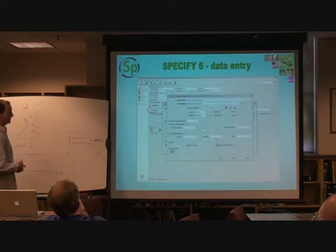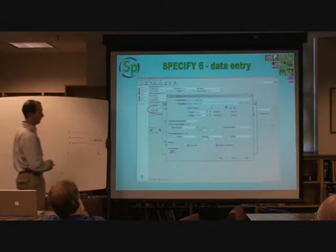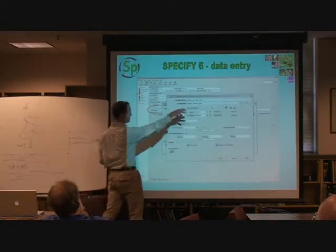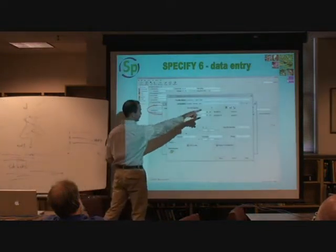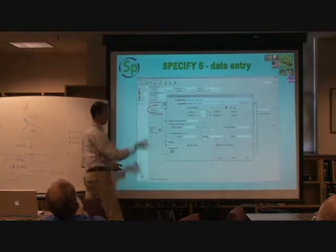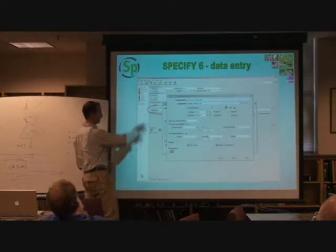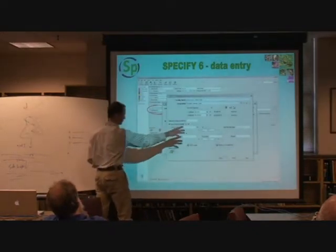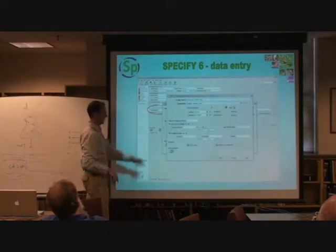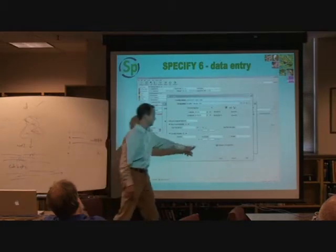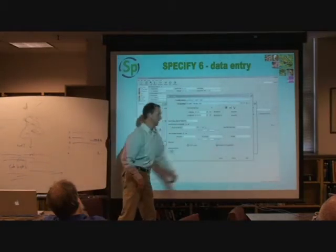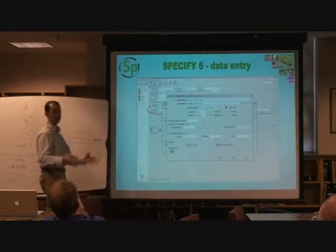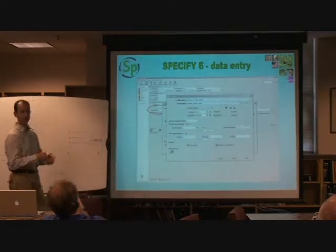This is connected to a locality form, where you have your locality name, a string of your geography coming from your tree, your lats and longs, all of your details, and both GeoLocate and Google Earth are implemented directly into the locality form itself.